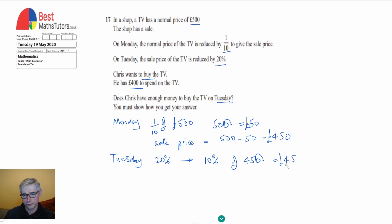So 10% of £450 is £45 and then if we want to find out what 20% is, because 2 times 10 is equal to 20, all we need to do is multiply the £45 by 2 and if we do that we'll get 90.